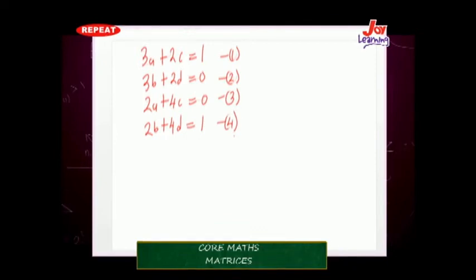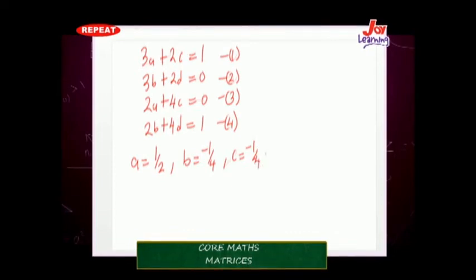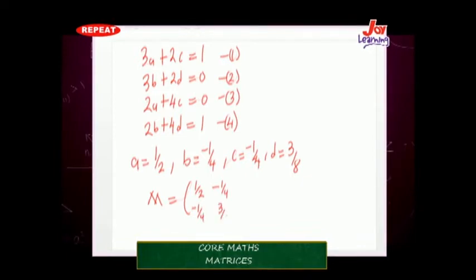Solving the four equations: A equals 1/2, B equals negative 1/4, C equals 1/4 (wait — from 2A plus 4C equals 0 with A equals 1/2, C equals negative 1/4), and D equals 3/8. So the matrix M equals 1/2, negative 1/4, negative 1/4, 3/8. Wait — let me state the answer as given: A equals 1/2, B equals negative 1/4, C equals 1/4, D equals 3/8, giving M equals the matrix 1/2, negative 1/4, 1/4, 3/8.